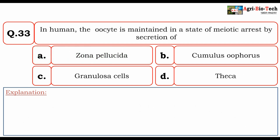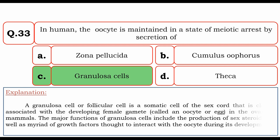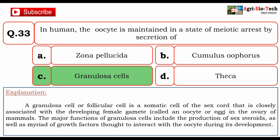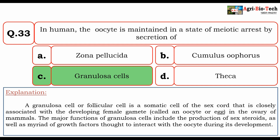Next question: in humans, the oocyte is maintained in a state of meiotic arrest by secretion of — A) zona pellucida, B) cumulus oophorus, C) granulosa cells, and D) theca. The correct answer is C) granulosa cells. A granulosa cell or follicular cell is a somatic cell of the sex cord closely associated with the developing female gamete called an oocyte in the ovary of mammals. The major function of granulosa cells includes production of sex steroids and growth factors that interact with the oocyte during its development.